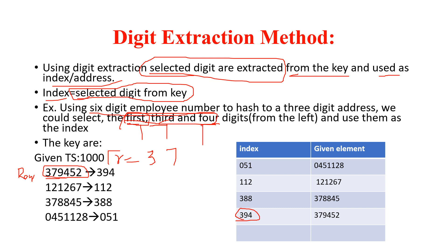For employee ID 121267, r equals three, so the first digit is 1, the third digit is also 1, and the fourth digit is 2, giving index 112. So this employee is stored at index 112. Next, for employee ID 378845, the index is 388. And for employee number 051, this number is stored at index 051.